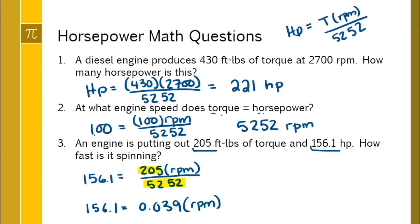If you want just RPMs by itself, the action you're going to do is divide both sides by 0.039. So to solve for the engine speed, the RPMs, you're going to take 156.1 and divide it by 0.039, and that's going to give you an engine speed of 4003.